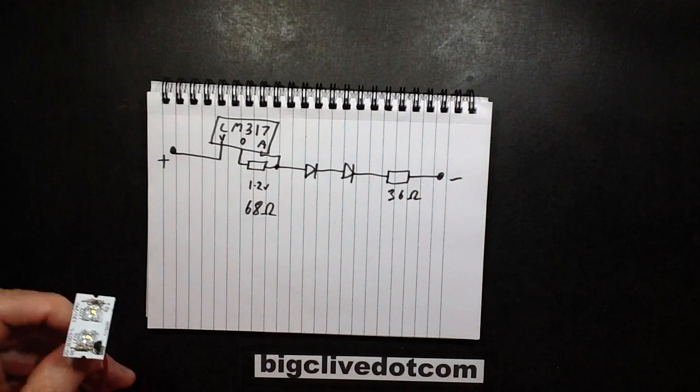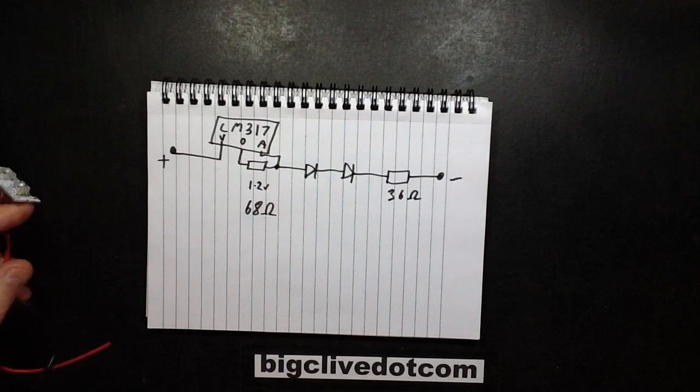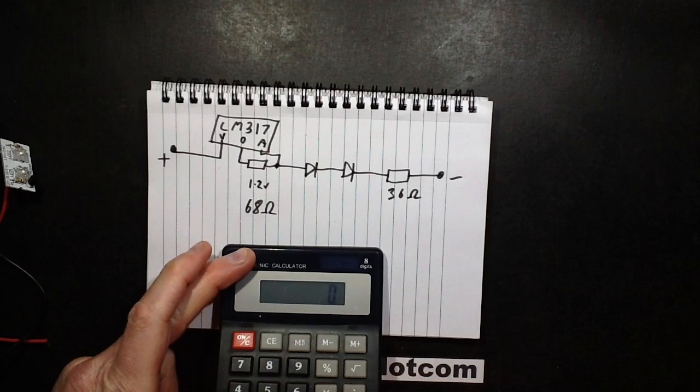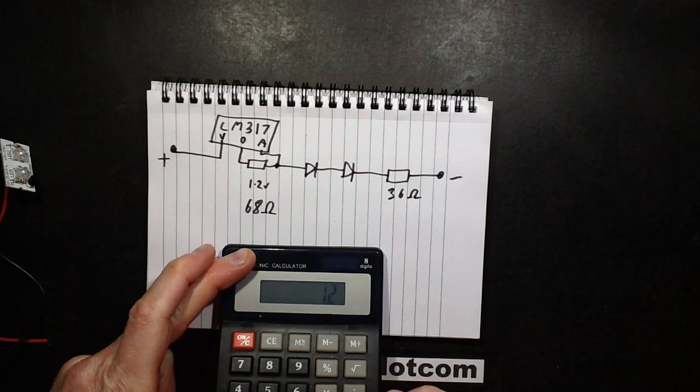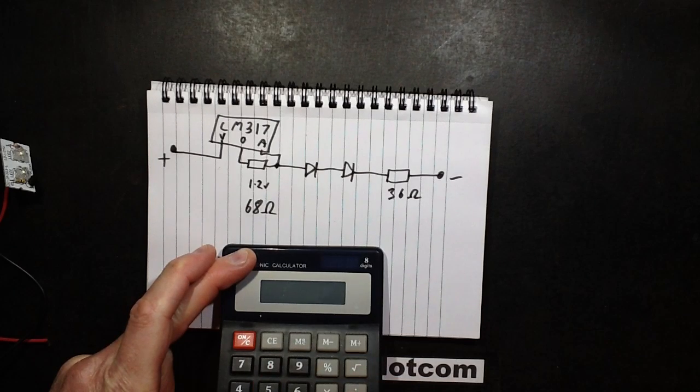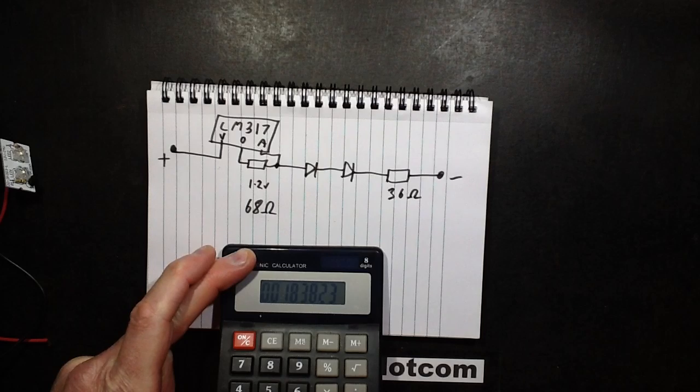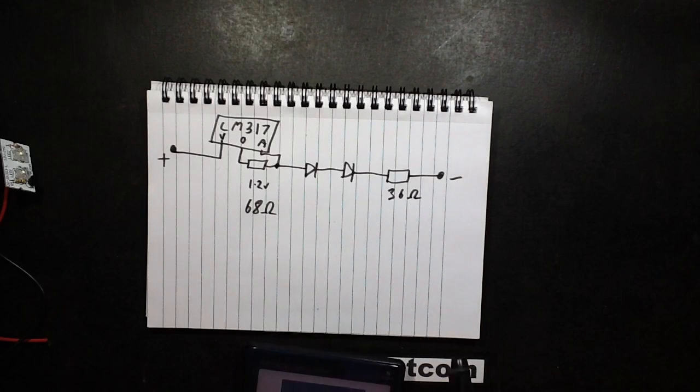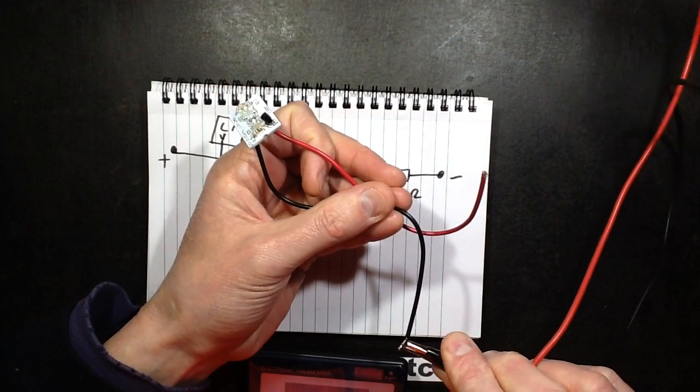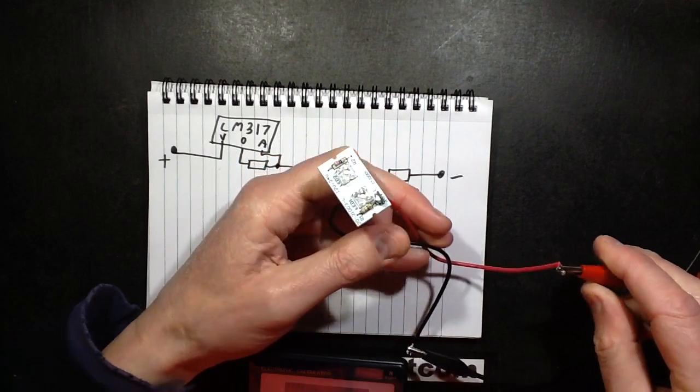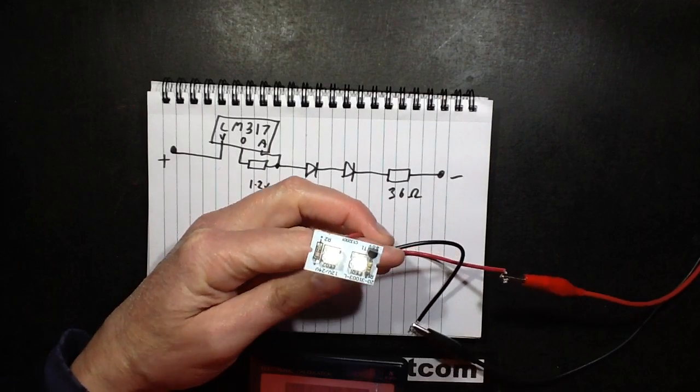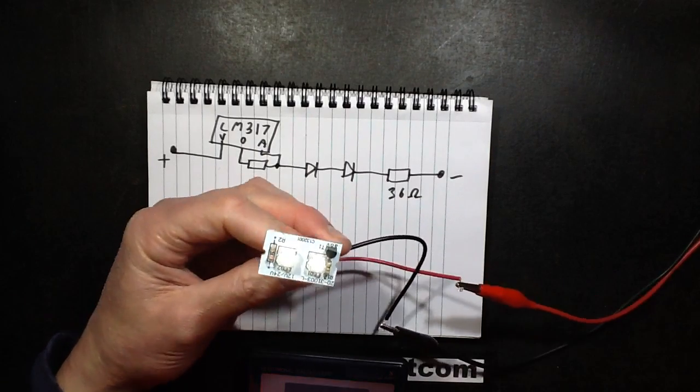So if you do the maths, it's I equals V over R. So it's 1.2, I think it's actually 1.25. Yeah, divided by 6.8 ohms equals 18mA. And certainly when it's put on, I'll just actually hook this up. So let's turn this on at 12 volts.